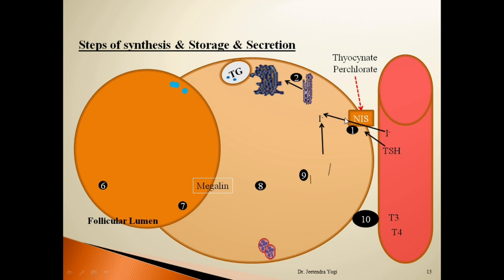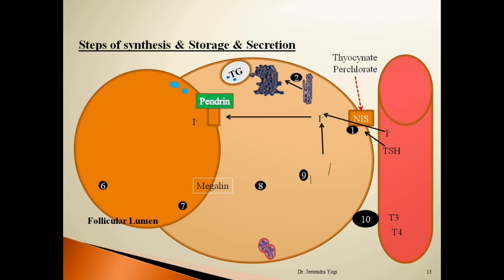As discussed, iodide ions enter the thyroid follicular cells and then move toward the apical surface. Here, the iodide ions enter into the follicular lumen with the help of pendrin, which is the sodium-independent iodide/chloride transporter. Pendrin was first discovered in patients with Pendred syndrome, who have thyroid dysfunction. After the iodide molecule enters the follicular lumen, the third step — oxidation of iodide — begins.